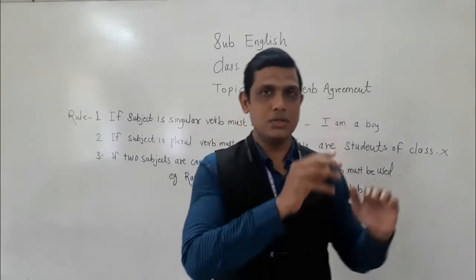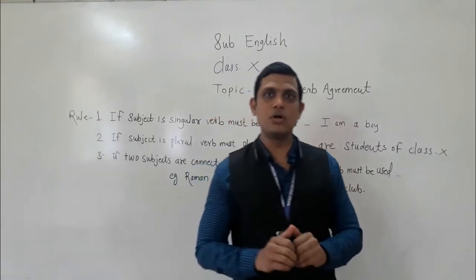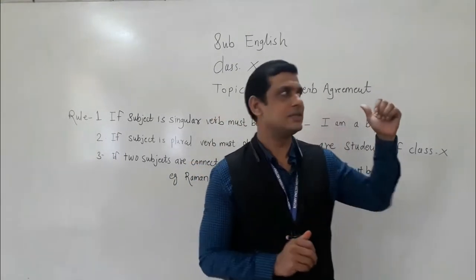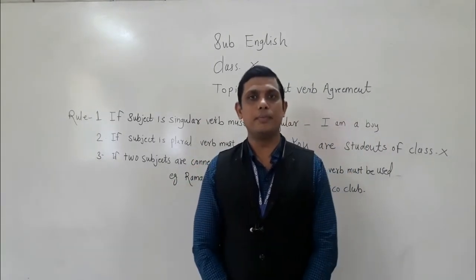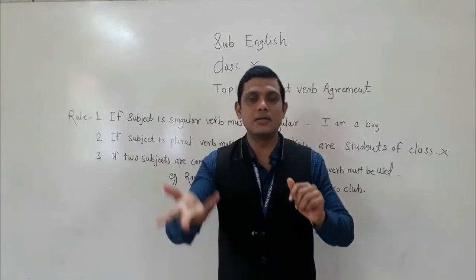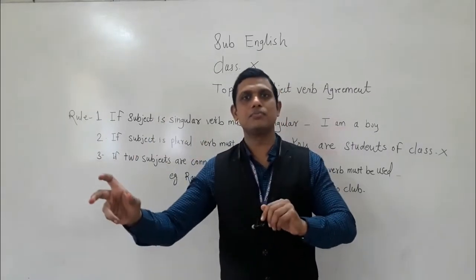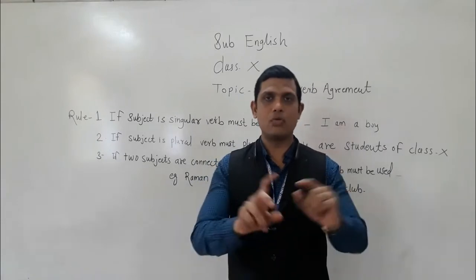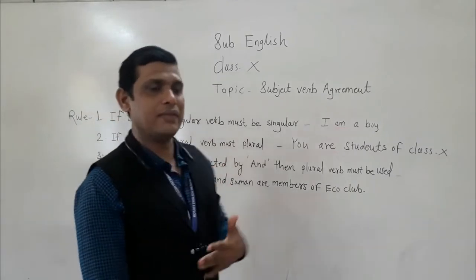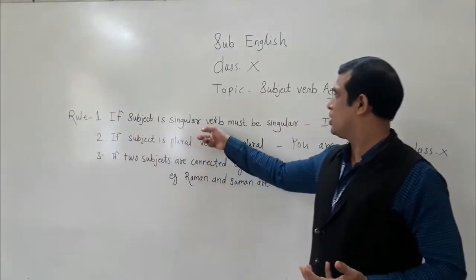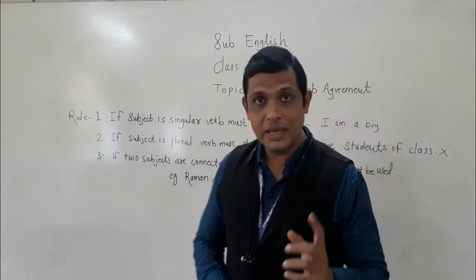We have taken one verb and used it for all the subjects. So what exactly have you learned? One very basic rule of subject-verb agreement: the subject must agree with the verb. Then only, when we utter the sentence, will it be correct. At any condition, subject must agree with the verb. Then only the sentence is correct. So, first rule you are going to learn: if the subject is singular, the verb must be singular.